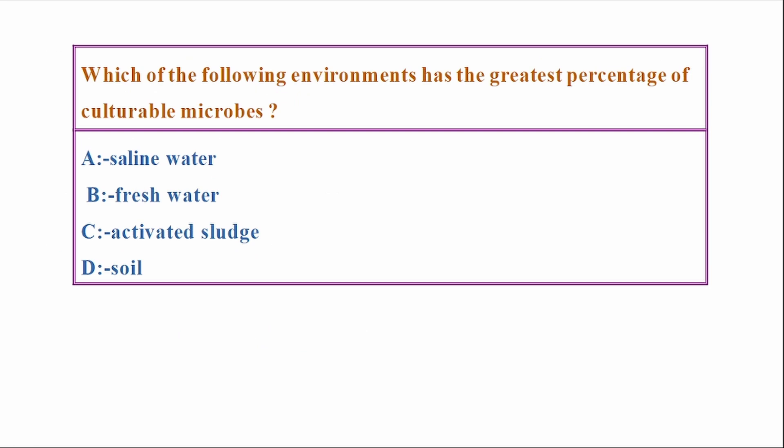Which of the following environments has the greatest percentage of culturable microbes? Options: saline water, fresh water, activated sludge, soil. Correct answer: Option C, activated sludge.